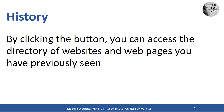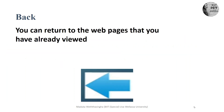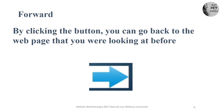Then the History button — by clicking it you can access the directory of the websites and web pages that you have previously seen. The Back button — by clicking the Back button you can return to the web pages you have already visited. Then the Forward button — by clicking the Forward button you can go back to the web pages you were looking at before you clicked Back.